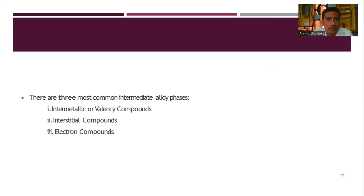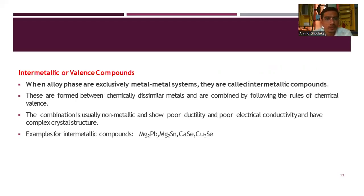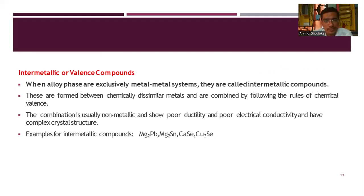There are three most commonly used intermediate alloy phases: intermetallic or valence compounds, interstitial compounds, and electron compounds. Intermetallic or valence compounds are formed in metal-to-metal systems, between chemically dissimilar metals, following the rules of chemical valence. Examples of intermetallic compounds include Mg₂Pb (magnesium lead), Mg₂Sn (magnesium tin), CaAl₂, and Cu₂Al.